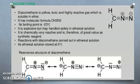You know friend, the diazomethane is yellow, toxic and highly reactive gas which is soluble in ether. It has molecular formula CH2N2. Its boiling point is minus 23 degrees. It is explosive but may be handled safely in ethereal solutions. It is chemically very reactive and therefore of great value as a synthetic reagent. Reactions with diazomethane are carried out in ethereal solution. Its ethereal solution is stored at 0 degrees Celsius.